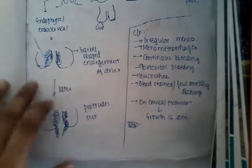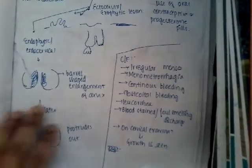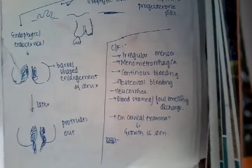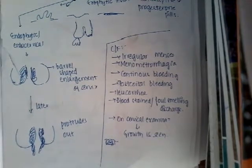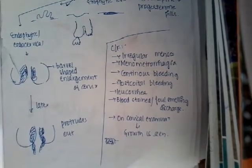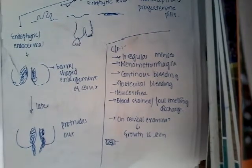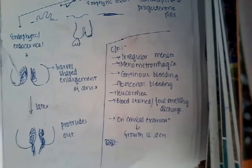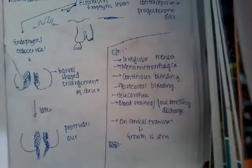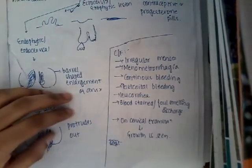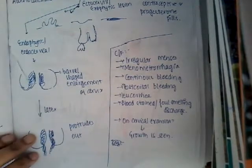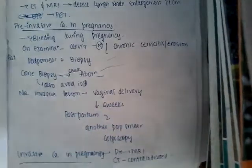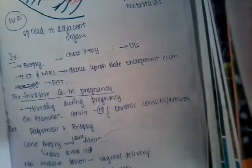The clinical features include irregular menstrual cycles, menometrorrhagia, continuous bleeding, post-coital bleeding, or post-menopausal bleeding. Any woman in post-menopausal age presenting with post-menopausal bleeding should raise suspicion for cervical cancer. There can also be leukorrhea — white discharge — or blood-stained or foul-smelling discharge. On cervical examination, the growth can be seen.